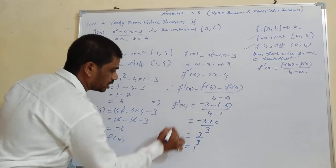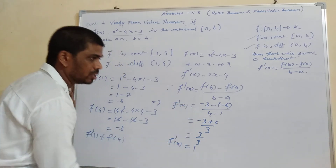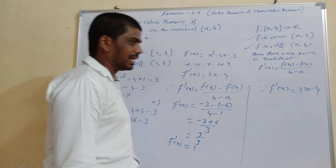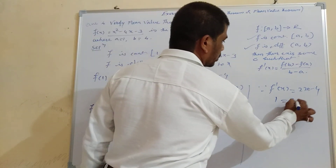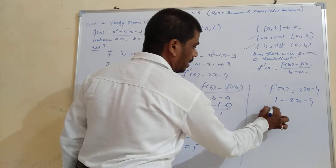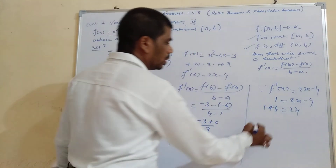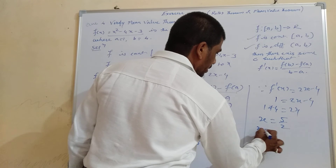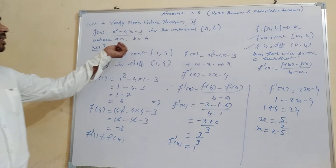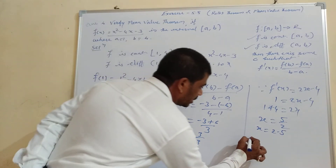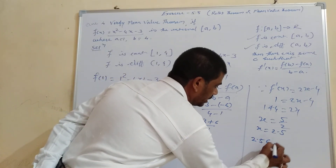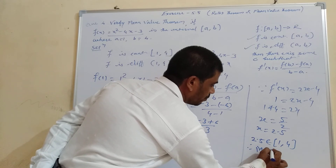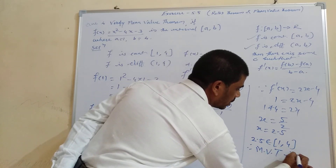So f dash of x equals 1. Since we know that f dash of x equals 2x minus 4, we set 1 equal to 2x minus 4, giving us 1 plus 4 equal to 2x, so x equals 5 upon 2, which is 2.5. Since 2.5 lies between 1 and 4, the mean value theorem is verified here.